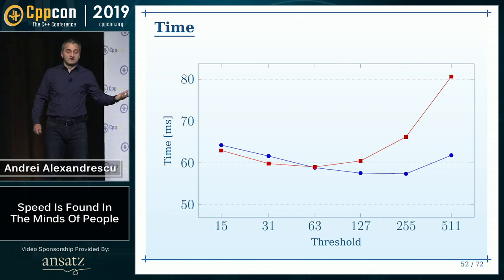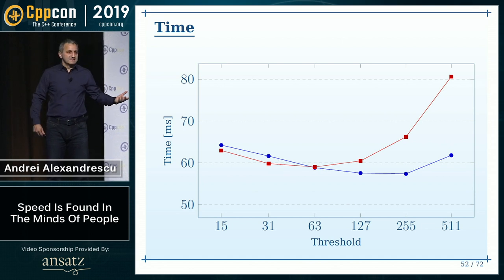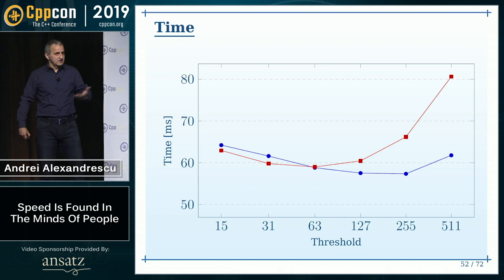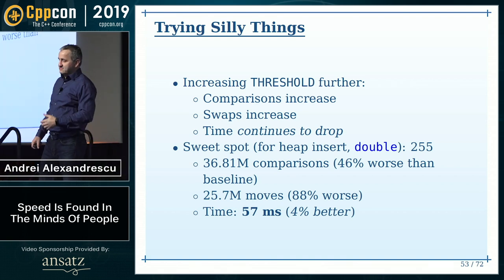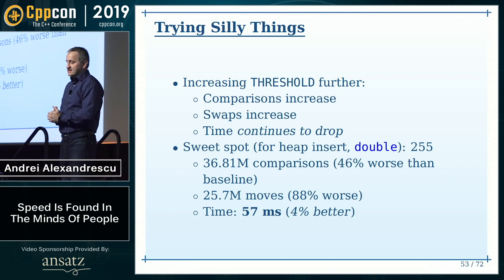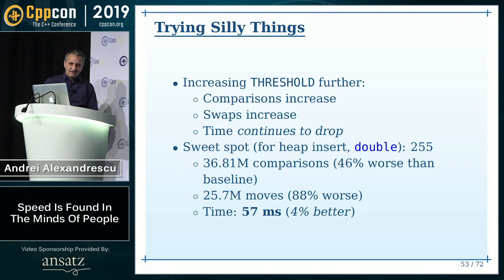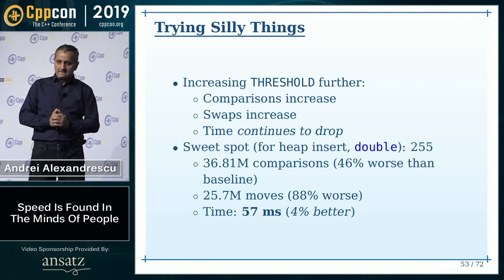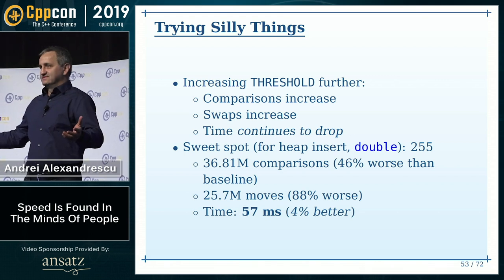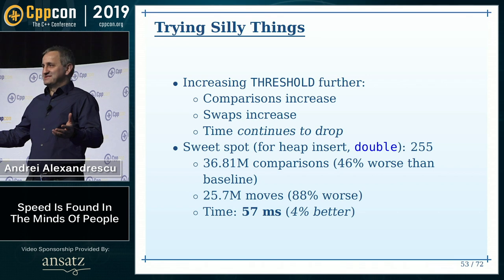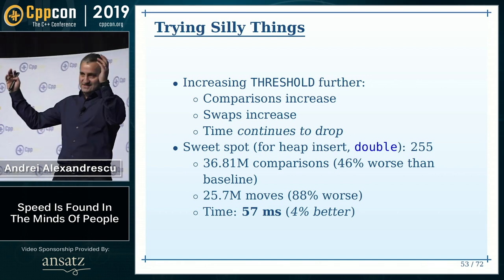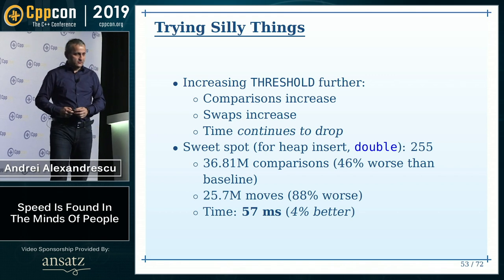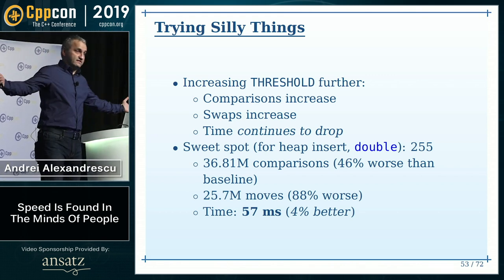I find this really weird and disquieting. It means everything I learned from books is no longer valid. There's no compass for the territory we're in right now. No guidelines — no 'if you do this, it gets better.' You don't know what to do. So trying silly things: we increased the threshold, increased comparisons, increased swaps, but time continues to drop. We got all the way down to 4% better over the baseline, which is a significant improvement. You shouldn't expect to get twice as fast — it's not a high-margin business. 4% is a good result if reproducible across a number of data shapes.